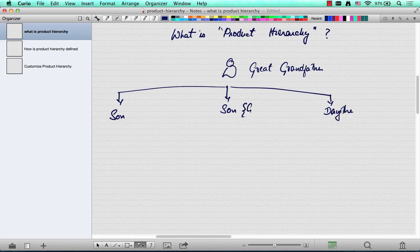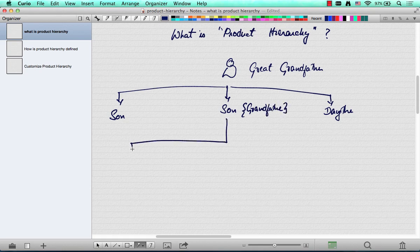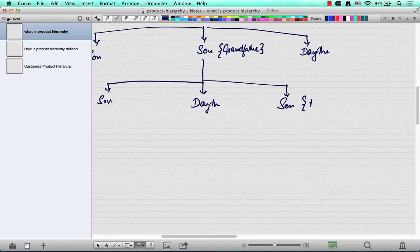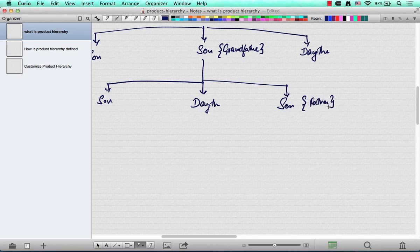And this is my grandfather. Grandfather has a son, a daughter, and then another son. And this is my father. My dad has a son and a daughter. That's me.